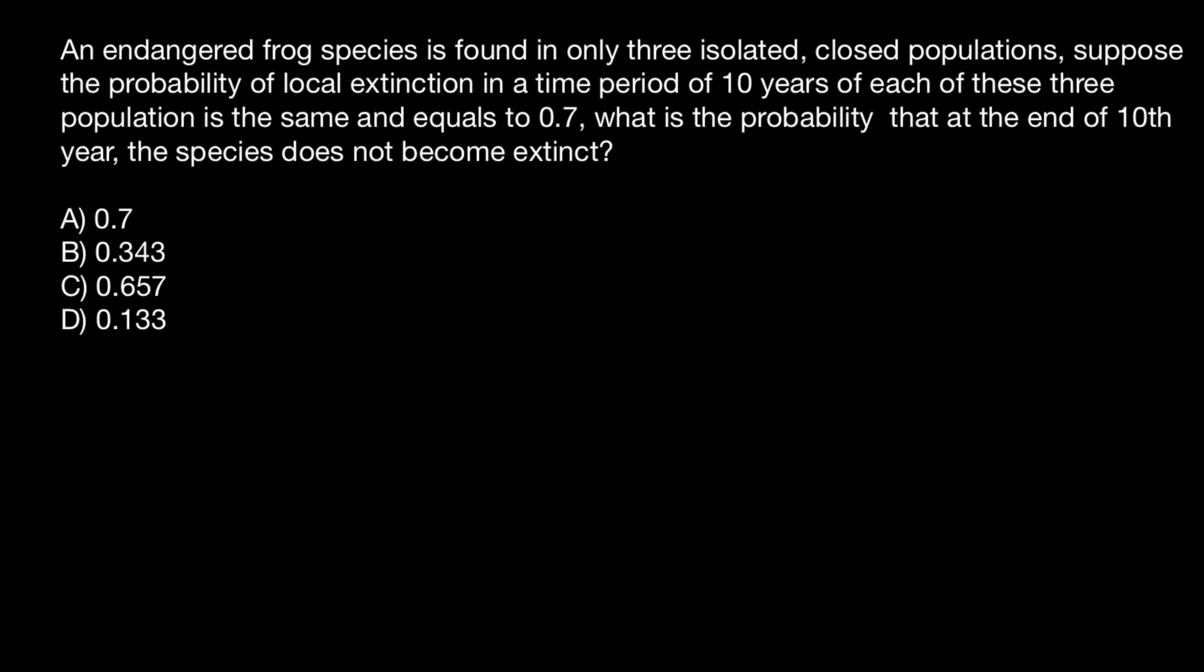An endangered frog species is found in only three isolated closed populations. Suppose the probability of local extinction in a time period of ten years of each of these three populations is the same and equals to 0.7. What is the probability that at the end of the tenth year the species does not become extinct?